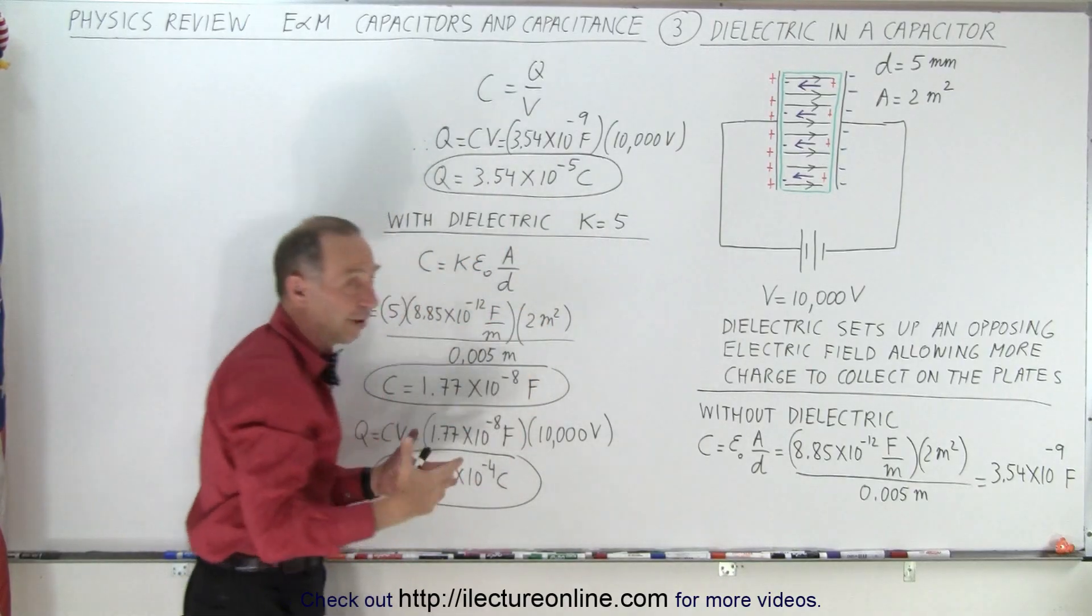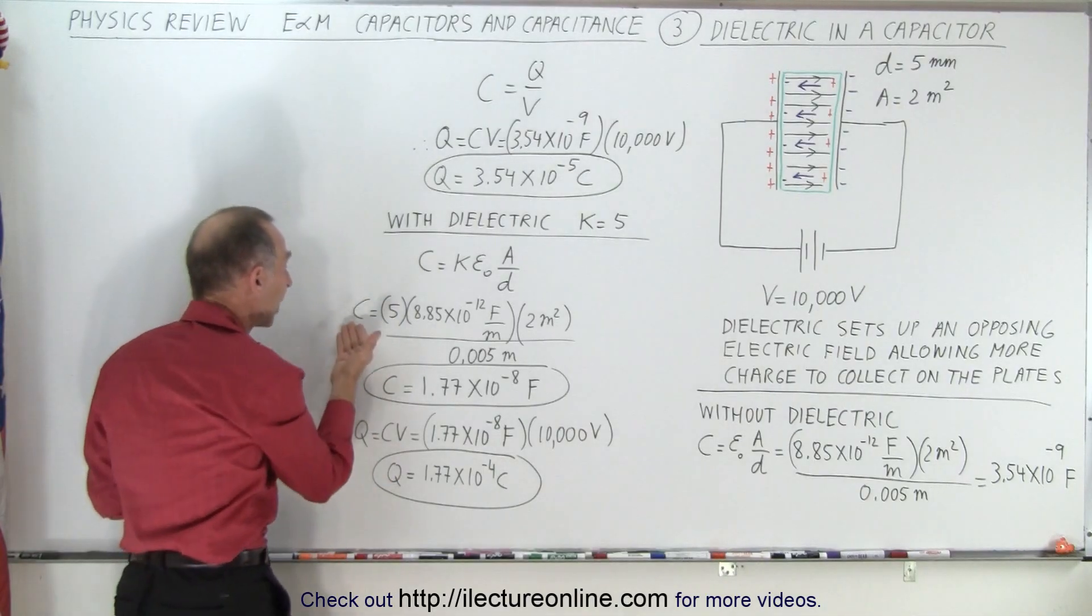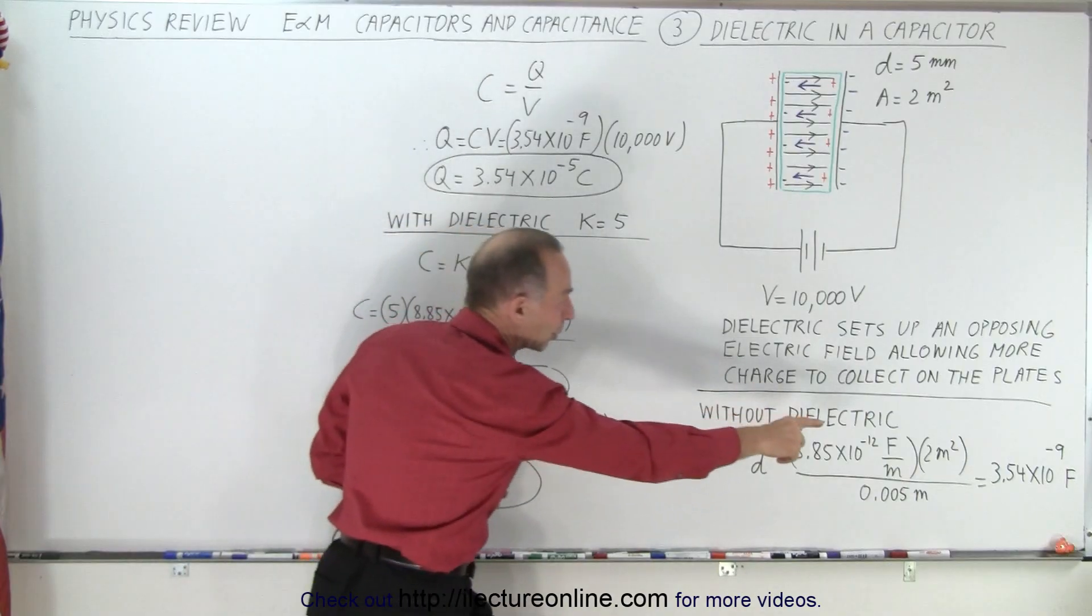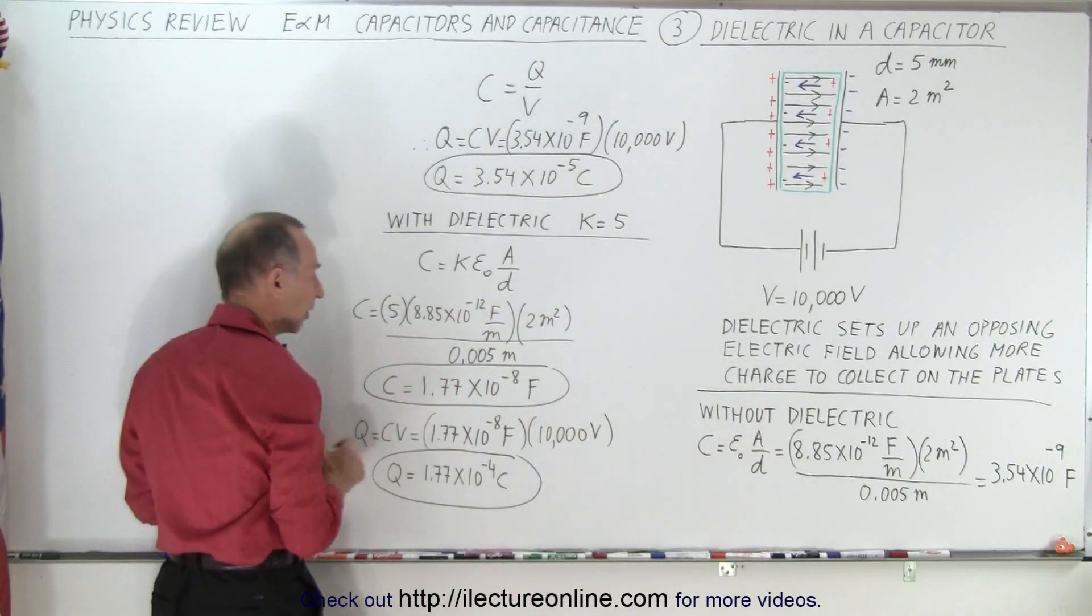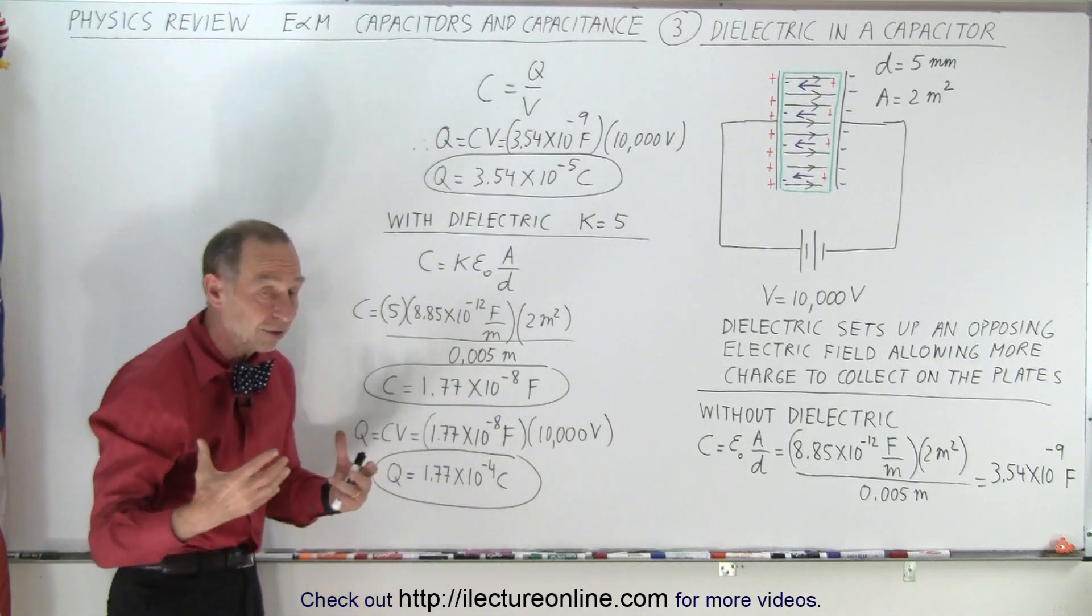In our example, let's say that k is 5, which is a reasonable number for a dielectric. Then that means that the capacitance has now increased 5-fold. And instead of 3.54 times 10 to the minus 9 farads, it's now 1.77 times 10 to the minus 8 farads. 5 times is great.